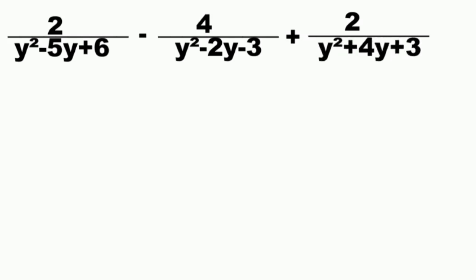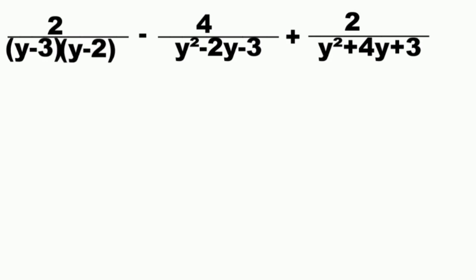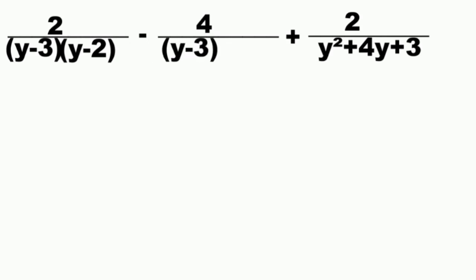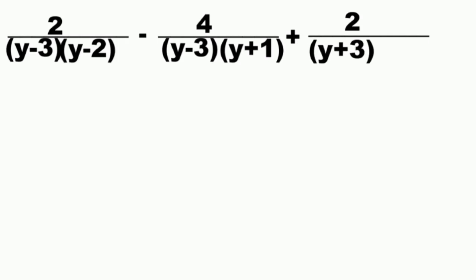Factor the first denominator as (y minus 3)(y minus 2). Factor the second denominator as (y minus 3)(y plus 1). And factor the last denominator as (y plus 3)(y plus 1).